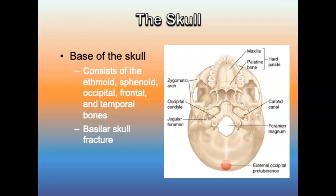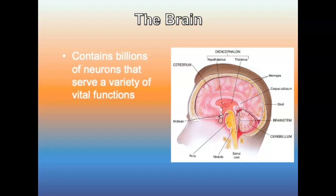The brain contains billions of neurons that serve various vital functions. The major regions are the cerebrum, the brainstem, and the cerebellum. It accounts for 2% of body weight and is the most metabolically active and perfusion-sensitive organ in the body. It is completely reliant on a consistent and constant source of oxygen and glucose via cerebral blood flow. Loss of blood flow for 5 to 10 seconds will result in unconsciousness.